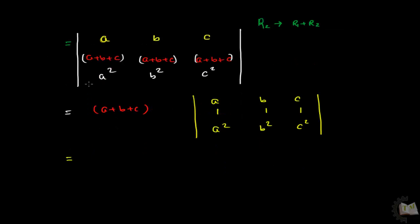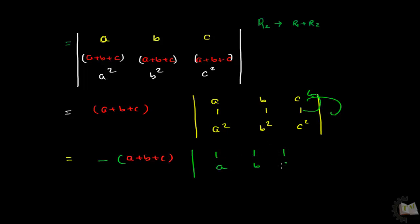There is a property of determinants: if you interchange rows, you must multiply a negative sign in front of the determinant. Now I am interchanging the rows, changing the order to: row 1, 1, 1; row a, b, c; row a², b², c².